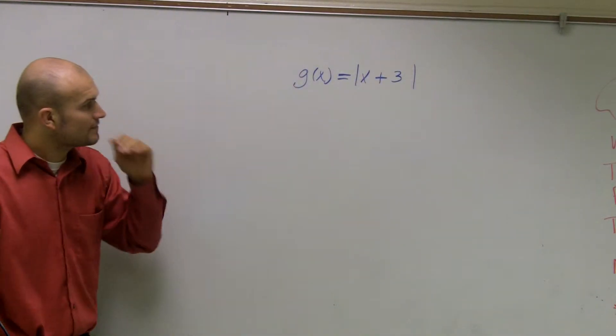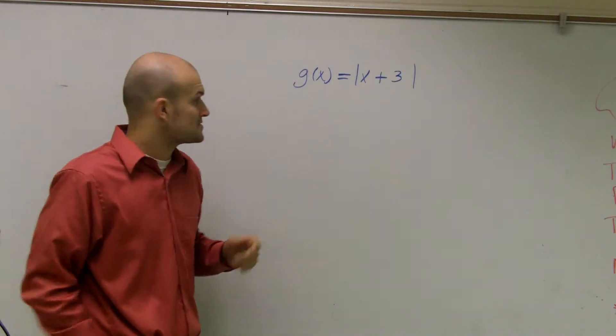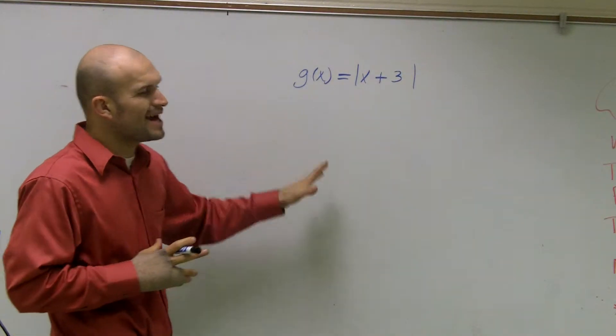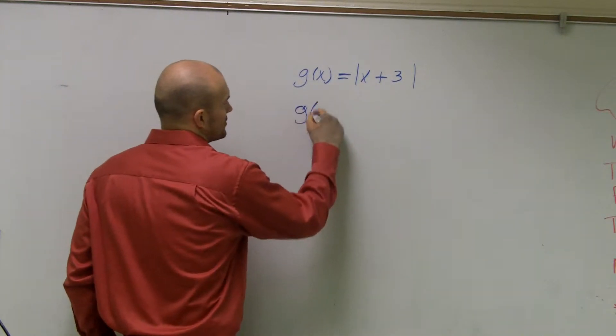All right, what I'd like to do is show you guys how to graph this absolute value function and then also find the domain and the range. So when graphing this, there's a couple things we need to remember. First of all, what does the absolute value of a graph look like?